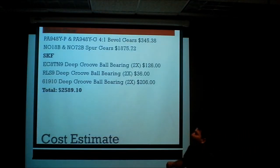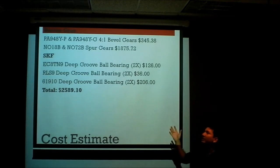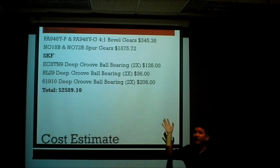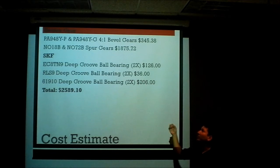Now, this is a cost estimate. The gears were all chosen and selected from Boston Gear. We have the bevels, which are conveniently in pairs. They cost $345, and the spurs were the most expensive, with almost $1,900.